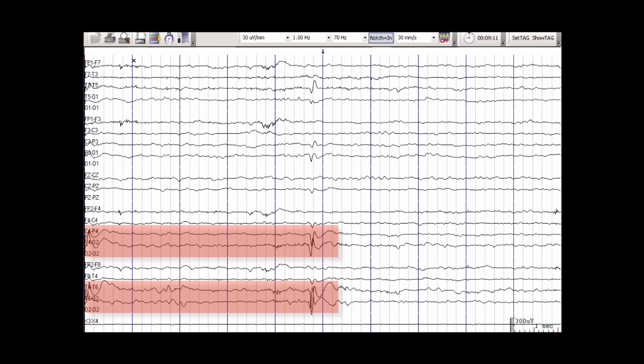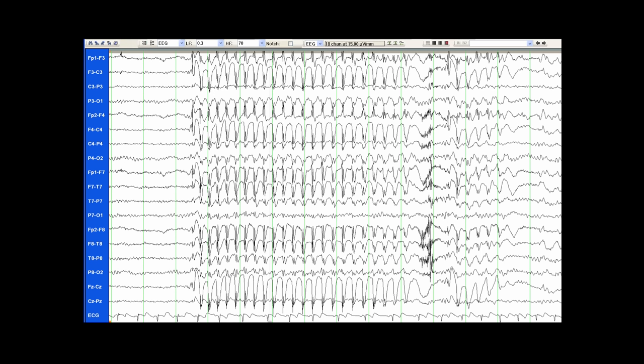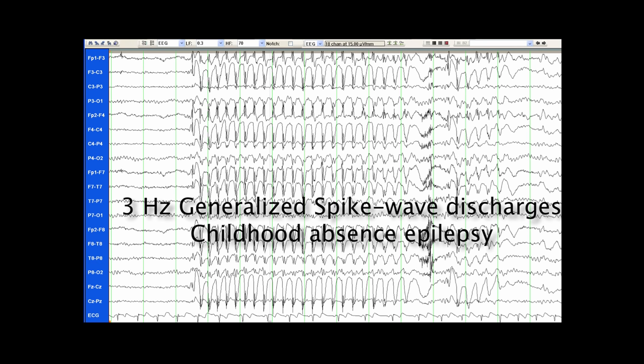Generalized epileptiform discharges are seen in patients with generalized epilepsy syndromes. Here is an example of a run of generalized epileptiform discharges. You can see that these discharges involve basically the whole head all at once. There is a long run of these discharges, lasting almost the entire length of this page. These are actually the typical 3 Hz generalized spike and wave discharges seen in childhood absence epilepsy.